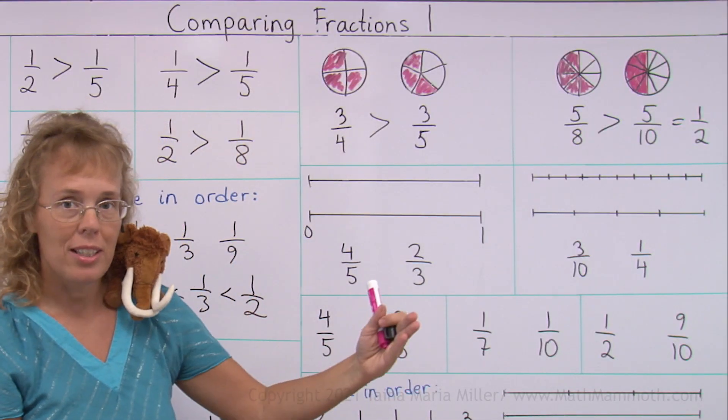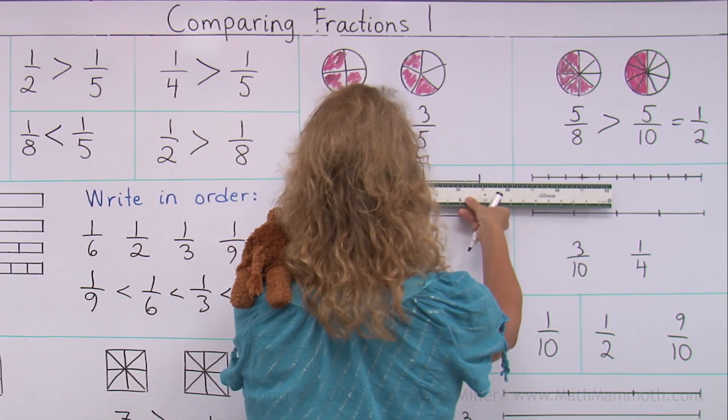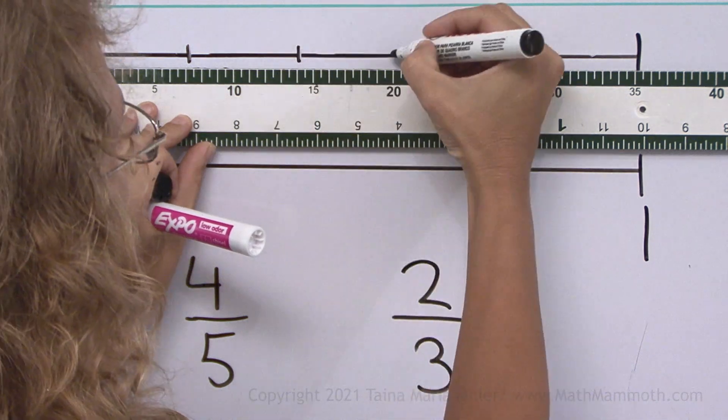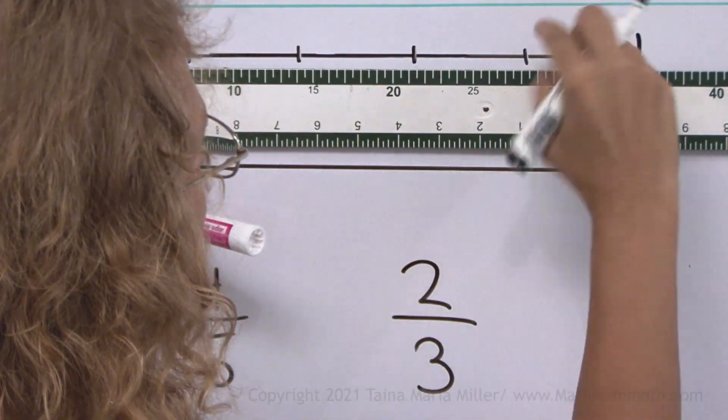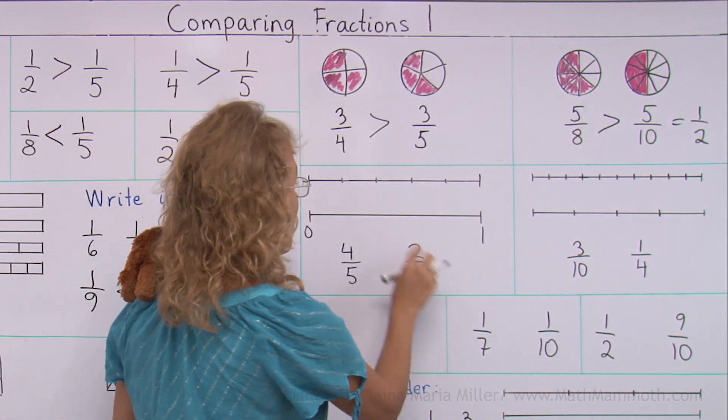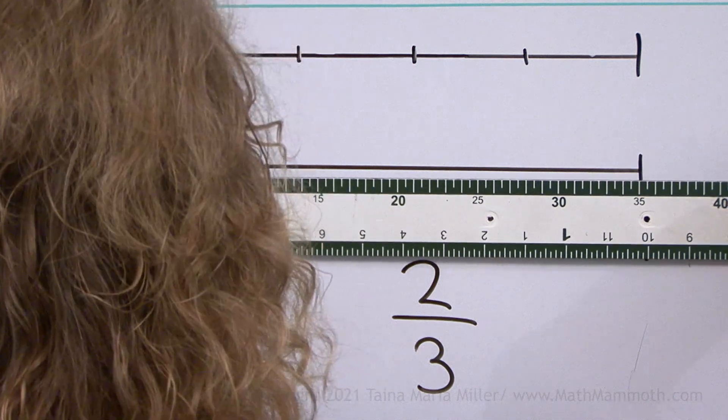35 into five parts. 35 divided by five, that would be seven. So, seven and 14 and 21 and 28. There, now it's divided into five parts. And this one into three parts. Okay, so I'll do that.